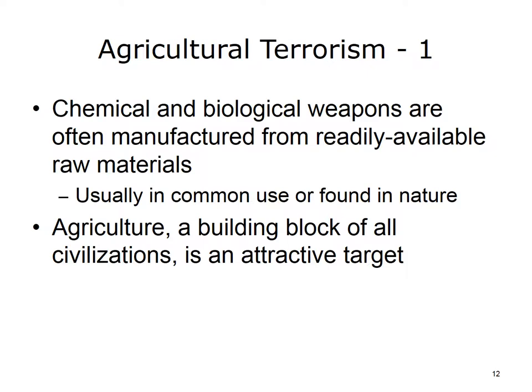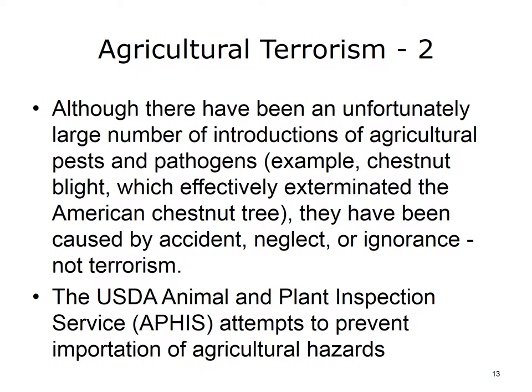Agricultural terrorism is thought by many to be an underrated threat. Agriculture is essentially the foundation of all civilizations and thus makes an attractive target. There have been many unfortunate instances of importation of foreign pests and pathogens, both in the U.S. and other countries. A prime example is chestnut blight, a fungus which effectively wiped out the beloved American chestnut tree. However, to date, these incidents have been caused by accident, neglect, or ignorance, and not by terrorist efforts. The USDA Animal and Plant Health Inspection Service, or APHIS, is the main line of defense against agricultural terrorism and hazards in the U.S.